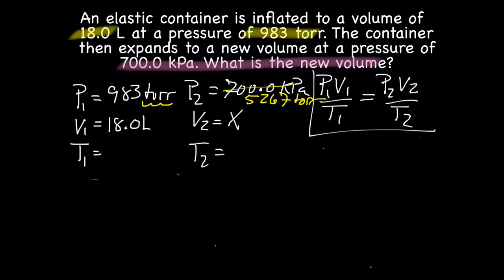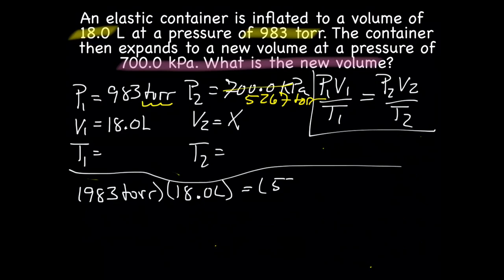Now that we have our pressure units the same, they're now both in Torr. We can plug our numbers into our equation. This is going to be a Boyle's Law because we just have pressure and volume. So we'll have 983 Torr, which is our P1, times our V1, which is 18 liters, equals our P2 times V2.